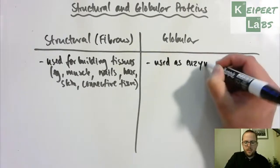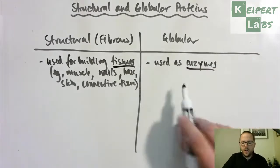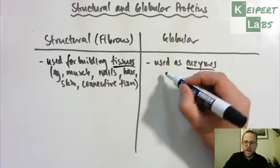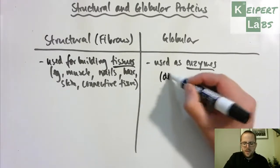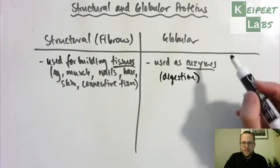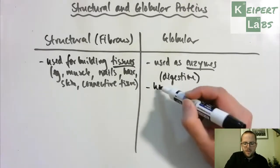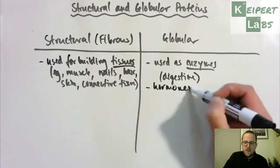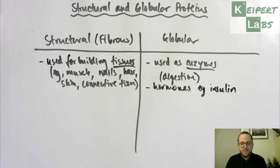Whereas globular proteins, we're thinking in terms of enzymes. So enzymes are used for a whole range of chemical reactions, e.g. digestion. They're also used as hormones. Insulin, for example, is a type of globular protein. We'll look at some examples of each of these in a minute.